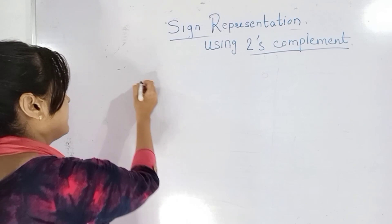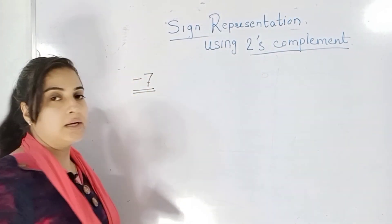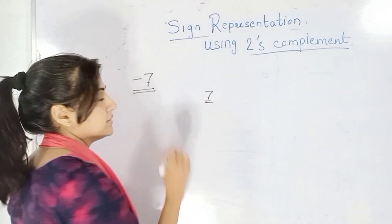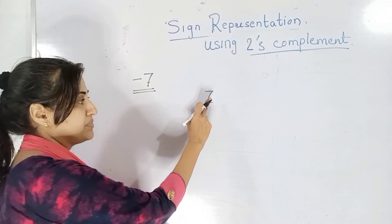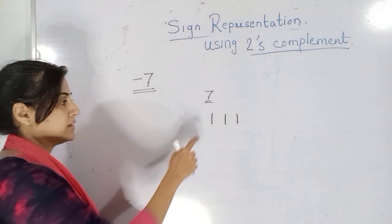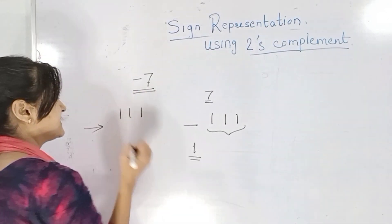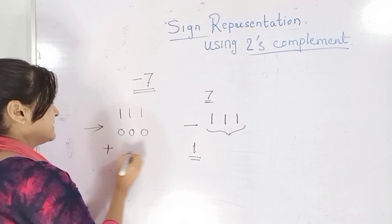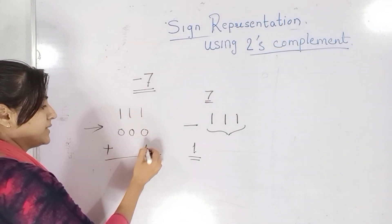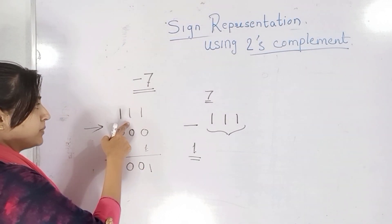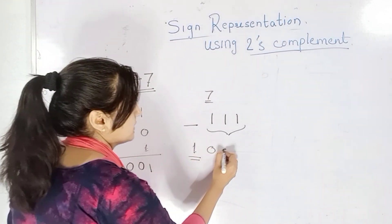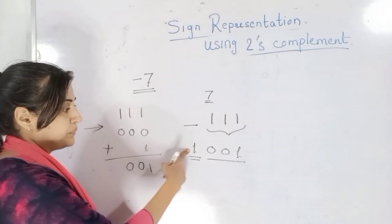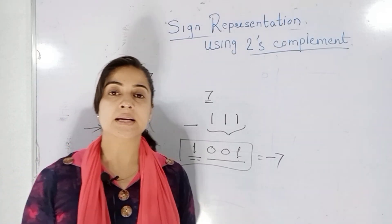Let us take one more example. If I need to find minus 7 in 2's complement method, first I represent 7 in binary form. I need only 3 bits for 7, which gives 111. Then I write its 1's complement — wherever there is a 1, I write 0 — giving 000. The next step is to add 1 to get the 2's complement. So adding 1 gives us the result. This is the 4-bit representation.